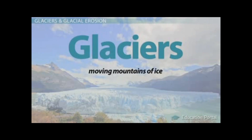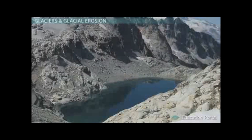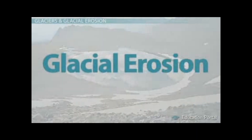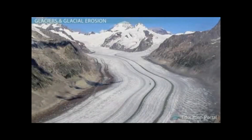They tend to move very slowly, often only a few centimeters per day, so it would be a rare occasion for a human to get struck by a glacier. This is not true, however, for the landscape that lies in the path of a moving glacier. Land and rock cannot move out of the path of a glacier, so they are subjected to glacial erosion, which is simply the carving and shaping of the land beneath a moving glacier. Glacial erosion, and the interesting landforms that result from this process, are the subjects of this lesson.